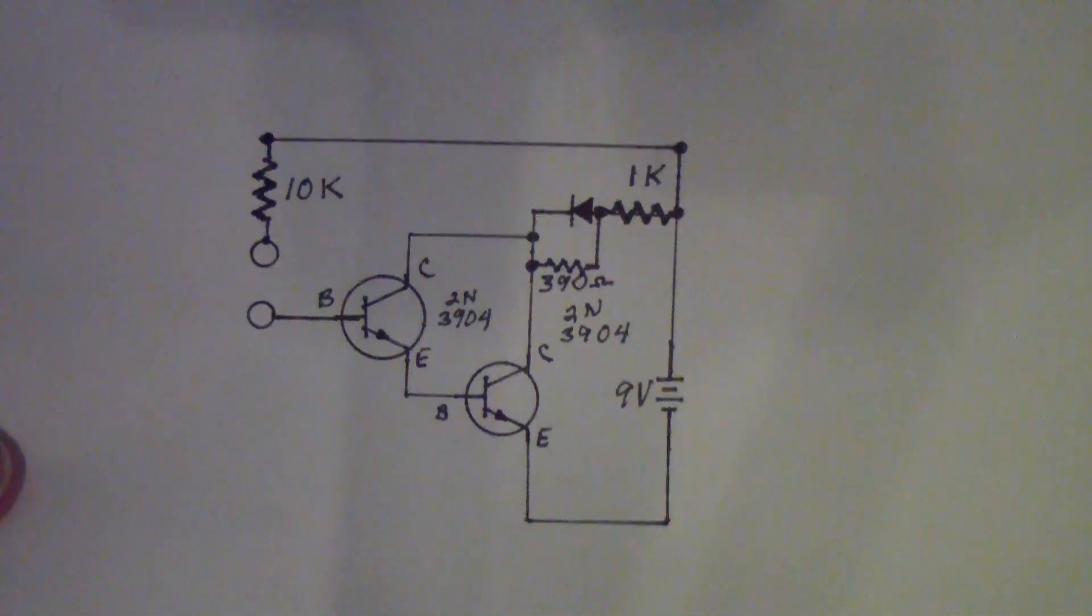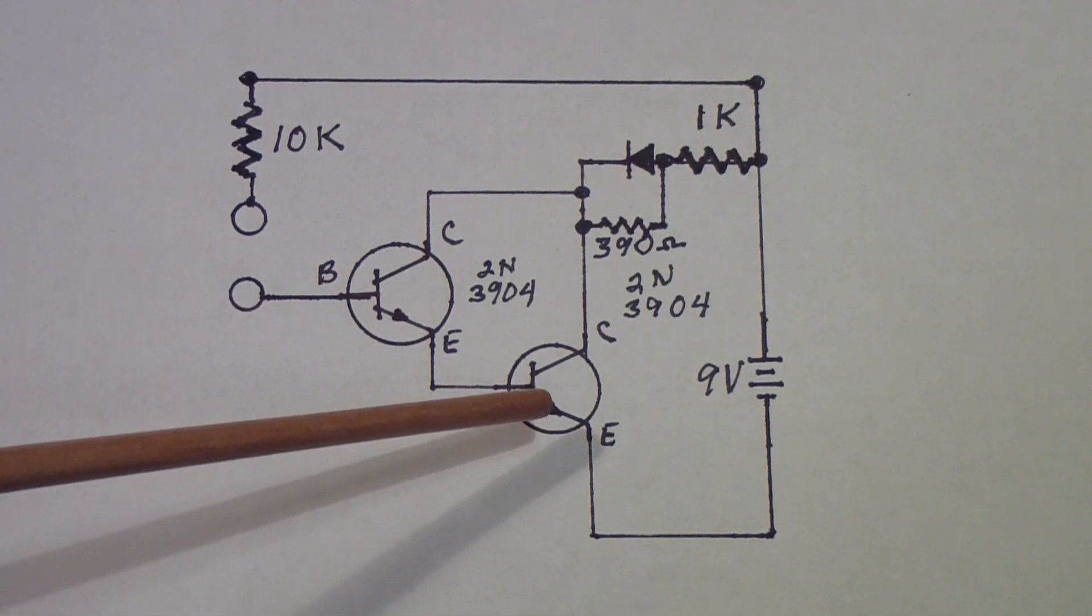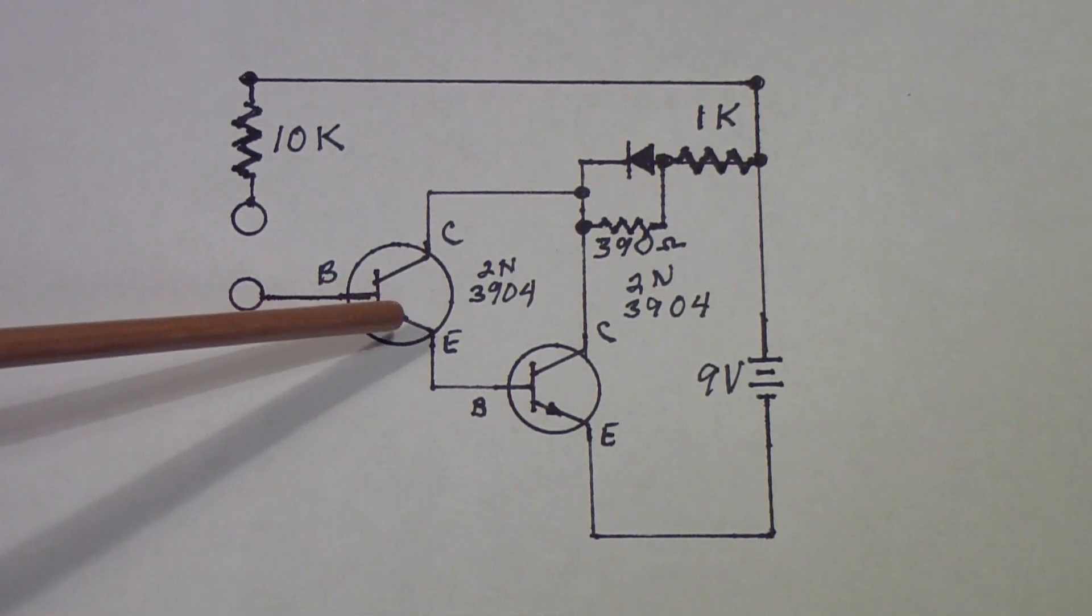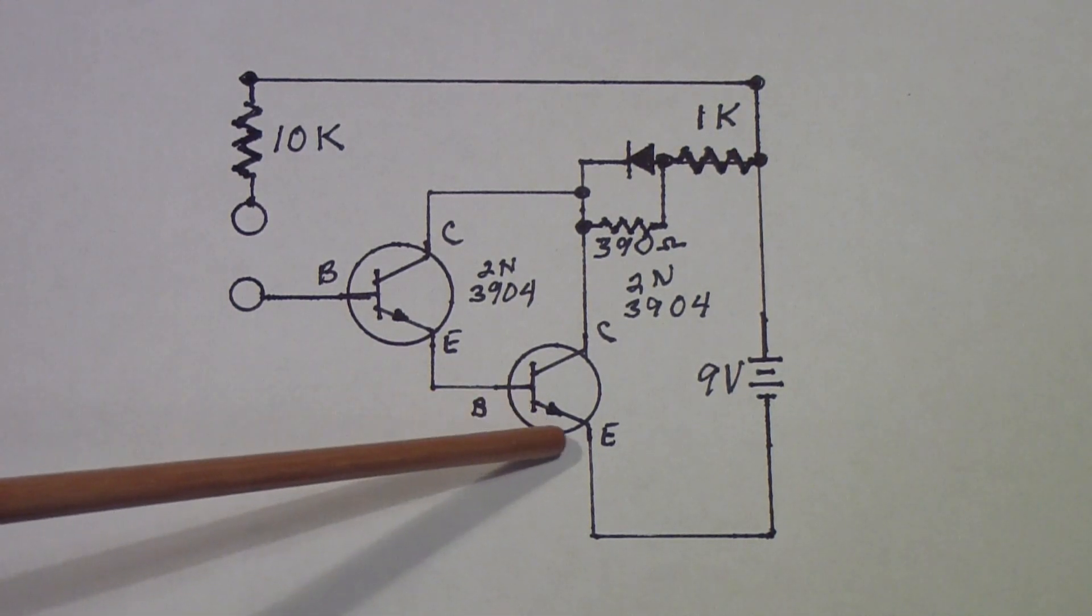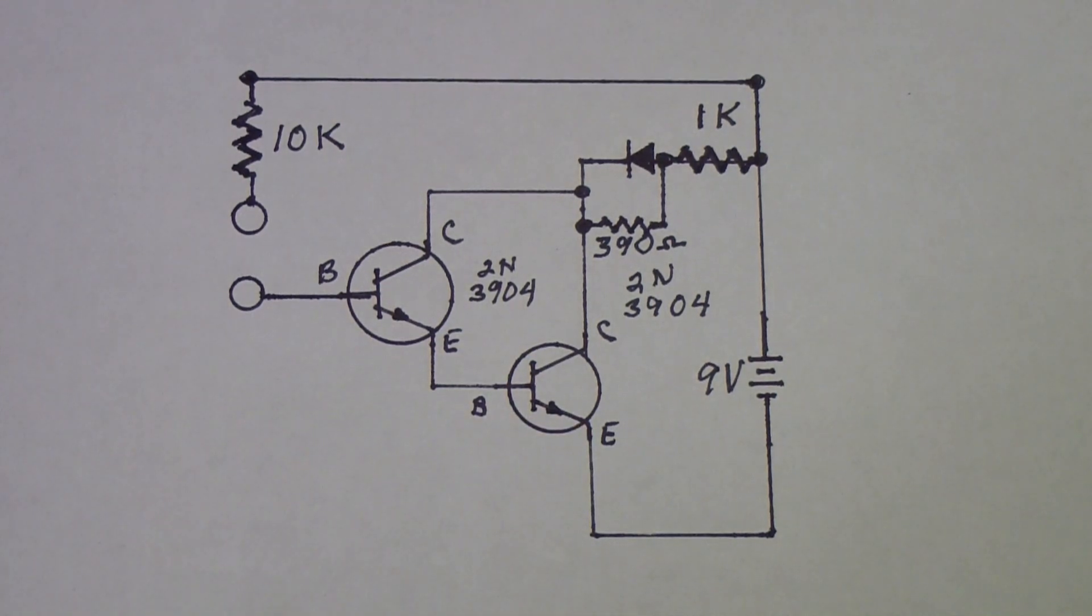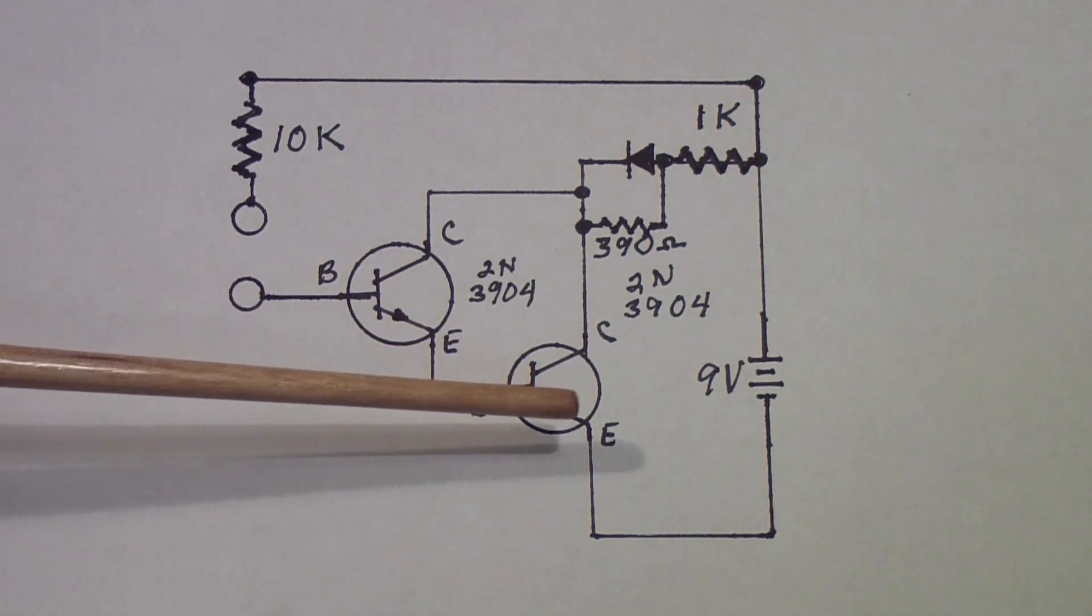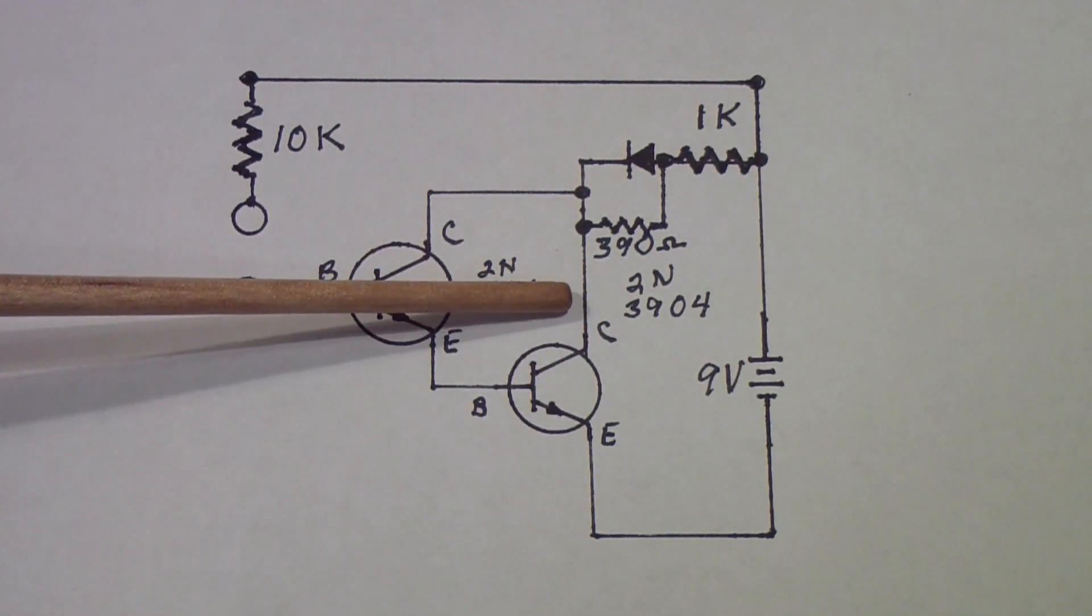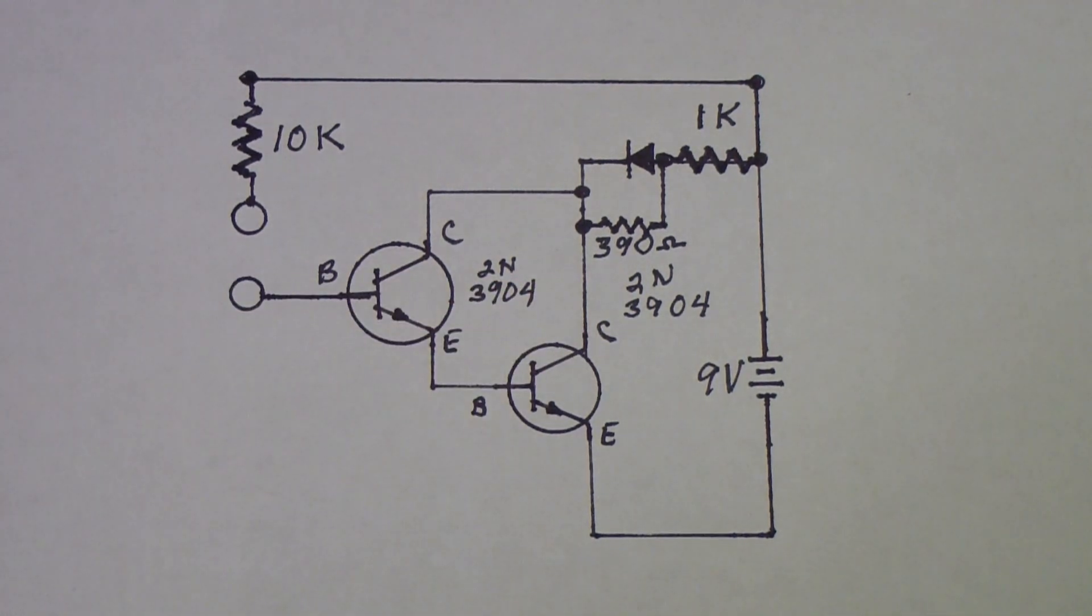Whenever you say high current multiplier and you're talking transistors, you're thinking of a Darlington configuration where the emitter of one transistor is connected to the base of another. Basically the two transistors multiply their DC current gain so a tiny base current gets multiplied into a very large collector current over here on the output of this transistor.